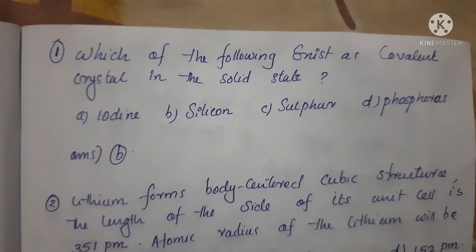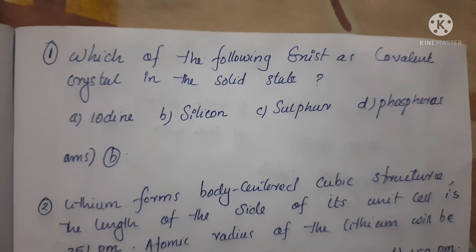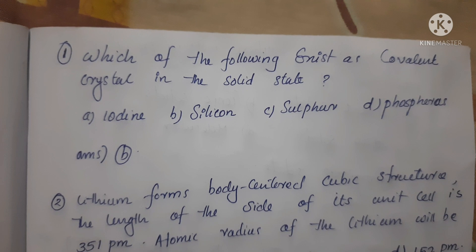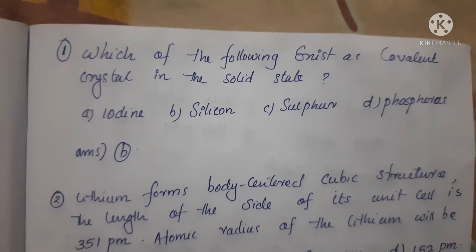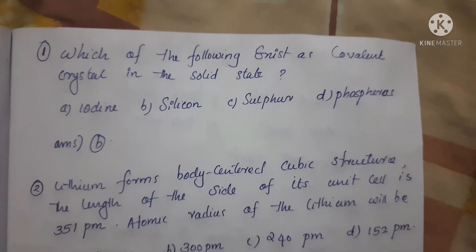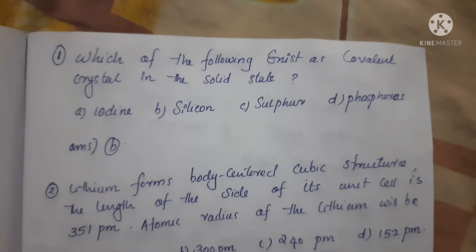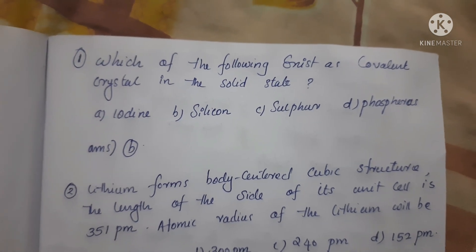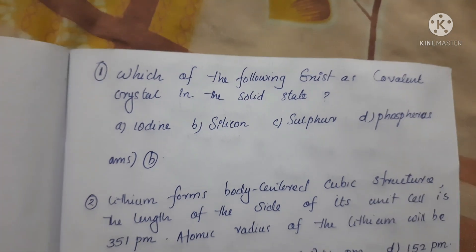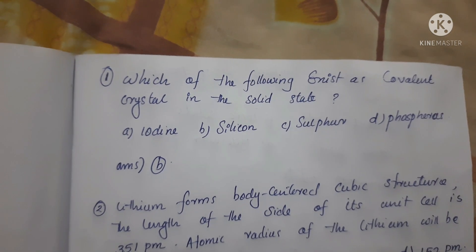First question: which of the following exists as covalent crystals in the solid state? Option A iodine, Option B silicon, Option C sulfur, and Option D phosphorus. The correct answer is Option B, silicon. Due to its network-like structure and diamond-like structure, silicon exists as covalent crystals in the solid state.